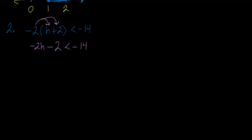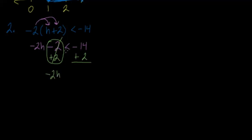Now we have a two-step inequality to solve. We're going to eliminate the constant, which is minus four. The inverse of that is to add four, so I add four on both sides — this cancels out on the left, leaving negative two h, and on the right negative 14 plus four gives negative ten. Wait — negative two times two is negative four, and we add two to cancel, giving negative 14 plus two equals negative 12. So now I have negative two h is less than negative 12.